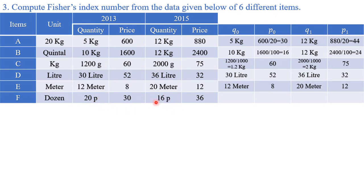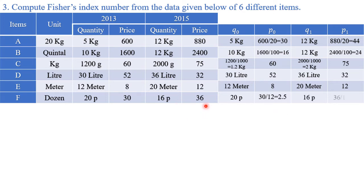For the dozen item, quantities are in pieces. I chose to convert the price rather than the quantity: 30 rupees per dozen ÷ 12 = 2.5 rupees per piece; 36 rupees per dozen ÷ 12 = 3 rupees per piece. You could instead convert quantities to dozens — either approach works. Now I have the new converted table ready.